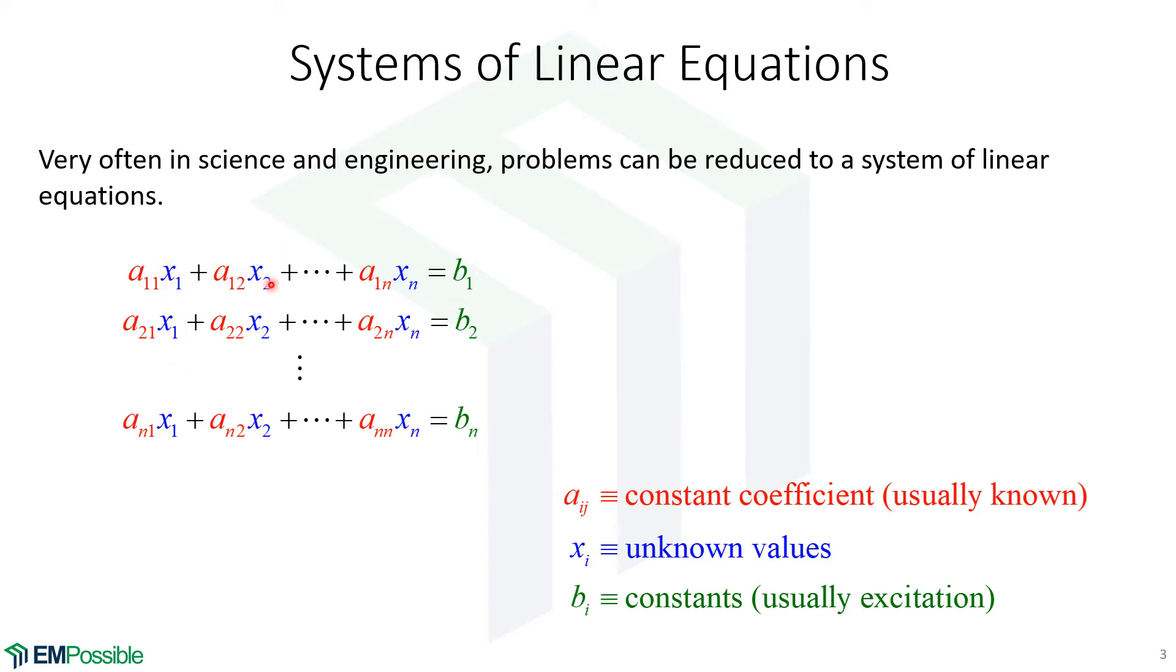The blue variables, these are the unknowns. So going back to the circuit theory example, these would be the currents or the voltages in the circuit that we're trying to find. And then on the right, these are also things that we should be able to have numbers to, these are constants. Back to circuit analysis, they would probably be the voltages of our voltage sources or the currents of our current sources that get folded into those equations. So there's numbers for everything except the X values. That's what we need to find.